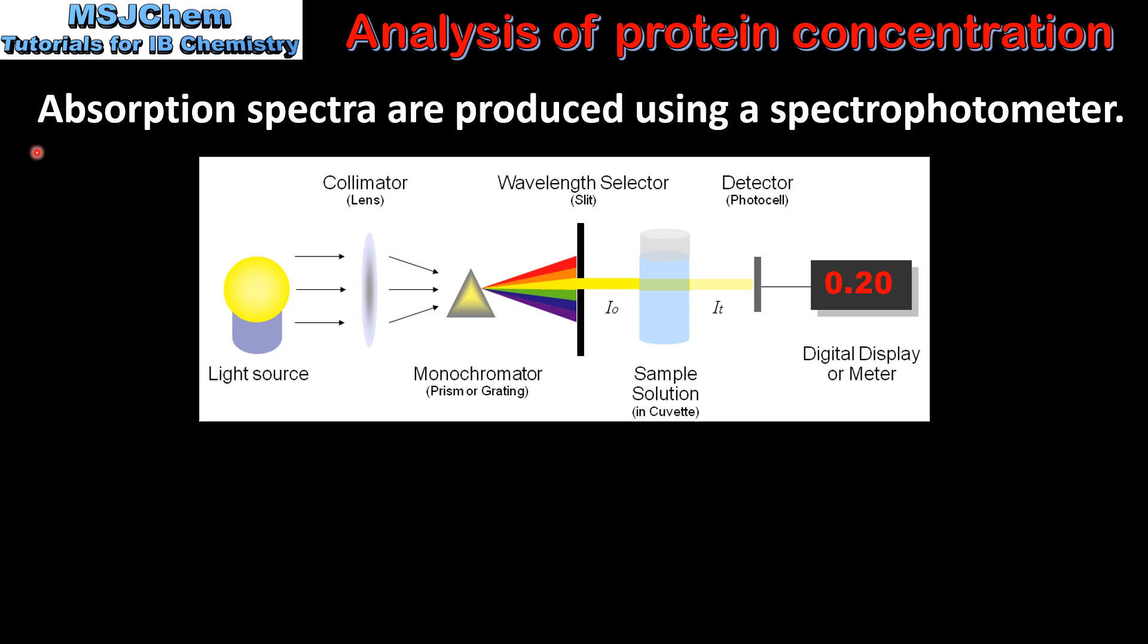Absorption spectra are produced using a spectrophotometer. Here we have a diagram of a spectrophotometer. The sample solution is placed in a cuvette and light of a certain wavelength is passed through the solution. From this, the absorption of light by the solution can be measured.